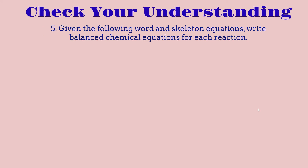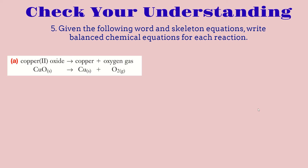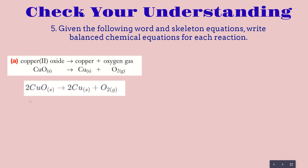For question number 5, given word and skeleton equations, we need to write balanced chemical equations for each reaction. For the first one, copper oxide = copper + oxygen gas. To balance it, we add a coefficient of two in front of copper oxide and a coefficient of two in front of copper, giving us: 2CuO = 2Cu + O₂.